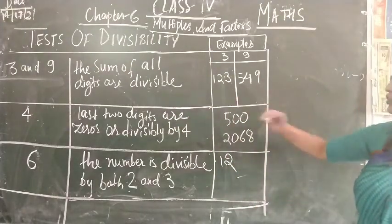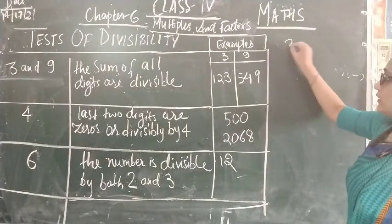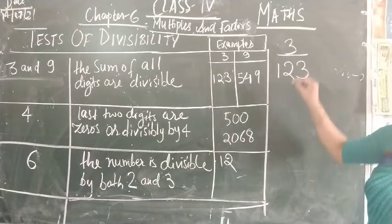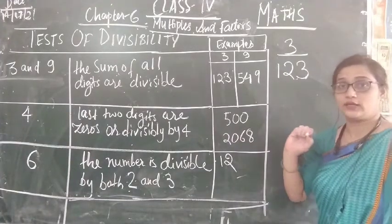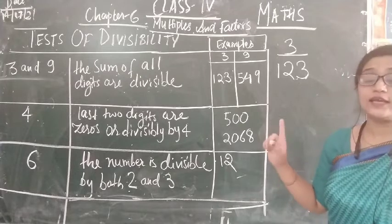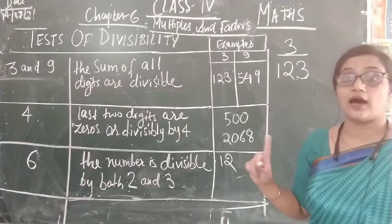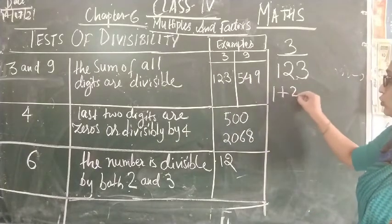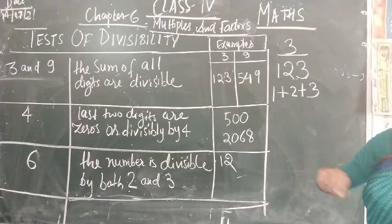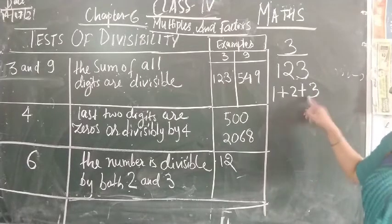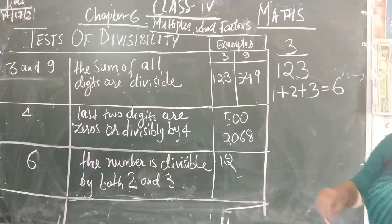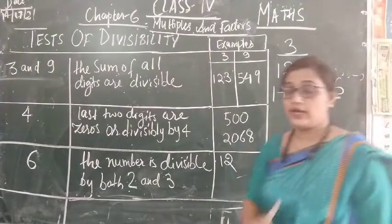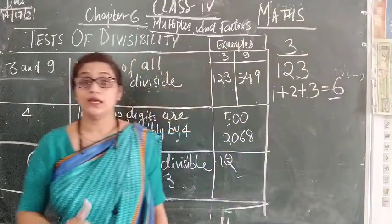With the help of an example — for the test of 3, the example is 123. The condition is: if the sum of all digits is divisible by 3, that means 1 + 2 + 3. So 1 + 2 = 3, and 3 + 3 = 6. The number we are getting is 6, and 6 is divisible by 3.